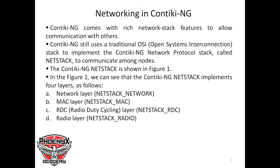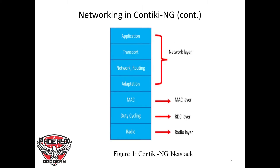The ContikiNG net stack is shown in Figure 1. We have the application layer, the transport layer, network routing, and the adaptation layers coming together to form the network layer. Then we have the MAC layer, the duty cycling layer which corresponds to the RDC — radio duty cycling — layer, and finally the radio layer.